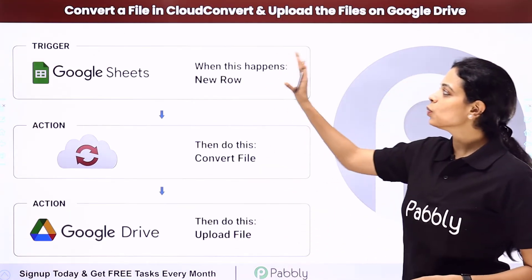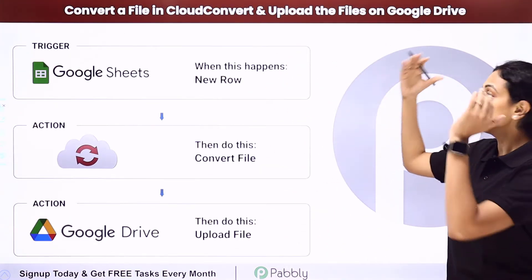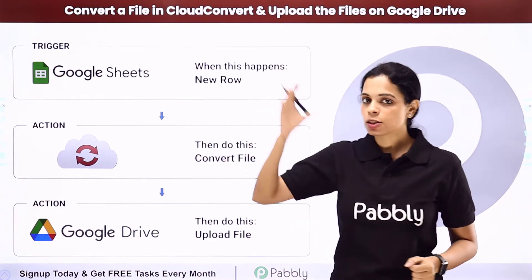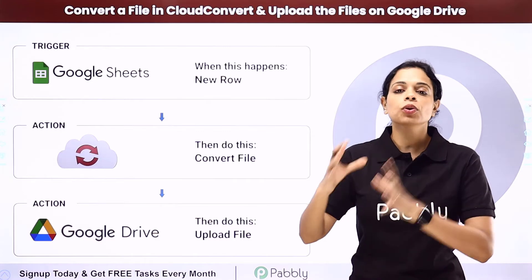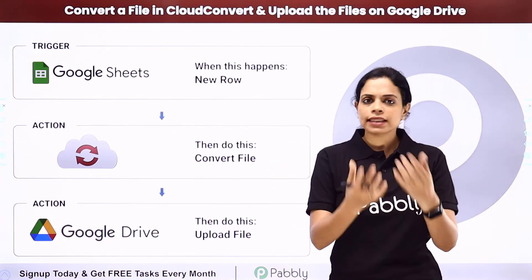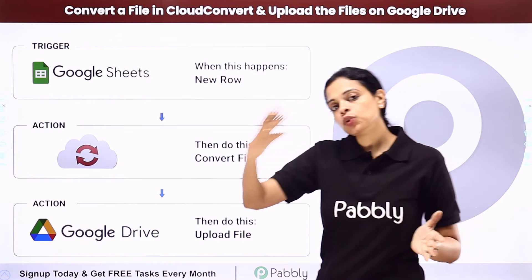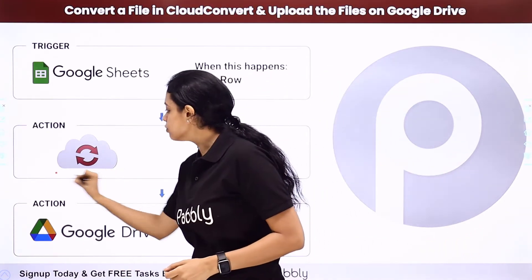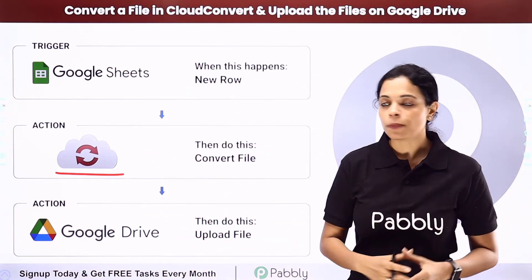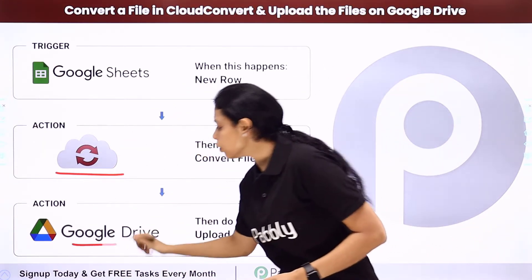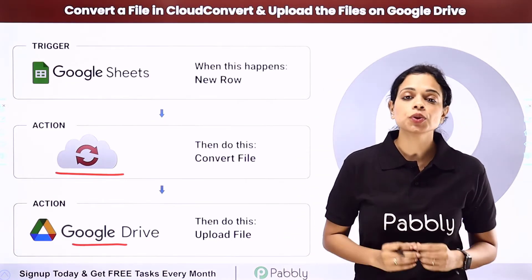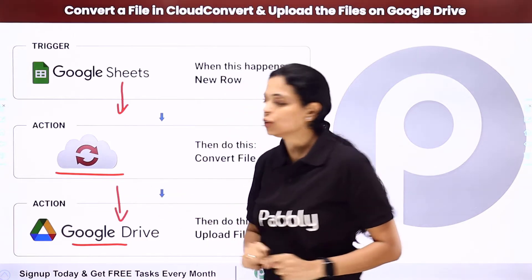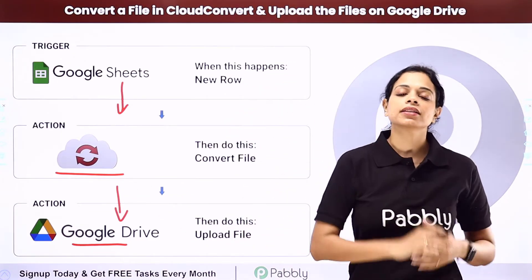In this video, we are going to see how to convert a file in Cloud Convert and upload the files on Google Drive. Let's say that you are using Google Sheets as a spreadsheet where you have kept all the URLs of the files, and they are in MP4 format and you want to convert them into MP3 format. This is just an example. So you are using Cloud Convert for the same — this is an online file converter — and then you wish to upload them on Google Drive once converted. For this, you will have to integrate these three applications, and the same can be done using Pabbly Connect software.